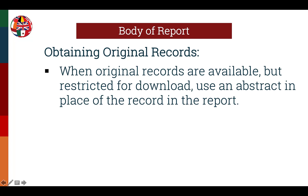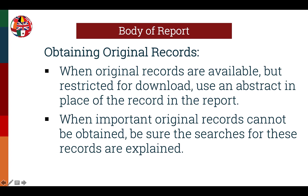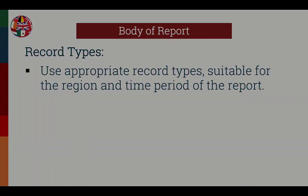When original records are available but restricted for download, be sure to use an abstract in place of the record in the report. When important original records cannot be obtained, be sure that the searches for these records are reflected and explained in the report and in the research log. For example, if a death index gives the names of parents and is used to help prove a relationship but the original is not available due to privacy restrictions, be sure this is well explained in the report and/or the research log.